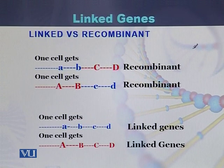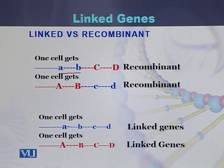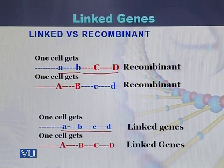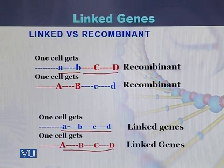To further understand the phenomena of linked versus recombinant: in case of recombinant, A and B were exchanged with the chromatid of the second homologous, and A, B has become C and D that was on the other chromatid of the other homologous chromosome. But in case of linked genes, if the same sequence comes in the offspring or in the daughter cells, we say the genes are linked. If they exchange parts, we say this is recombinant. If they do not change parts, they are called linked genes.